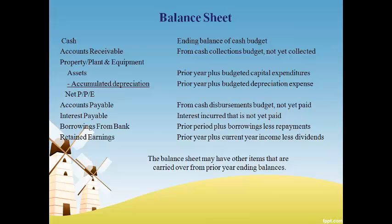Cash comes from the ending balance on the cash budget. Accounts receivable is the amount of sales not yet collected from the cash budget at the end of the period. Long-term assets are changed by the amount on the capital expenditures plan. Accounts payable is the amount on the cash disbursements budget that are not yet paid at the end of the period. Interest payable is computed based on expected borrowings, and retained earnings is adjusted for projected income and dividends.